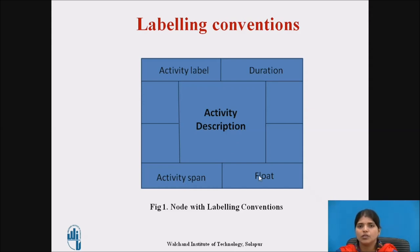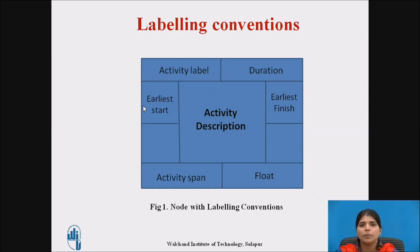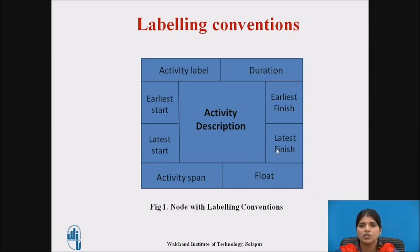These four components relate to the forward pass and the backward pass. With the help of the forward pass you calculate the earliest start and earliest finish date, and with the help of the backward pass you calculate the latest start and the latest finish date.